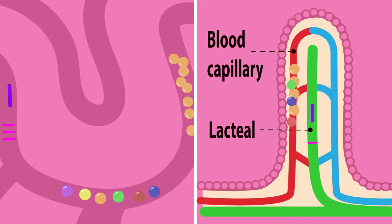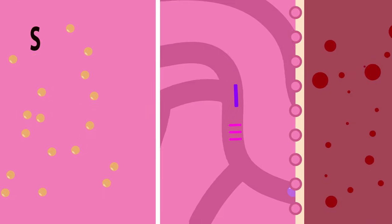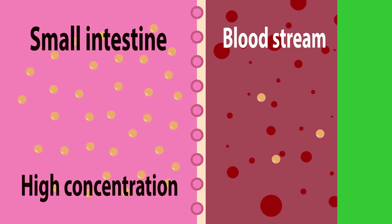These small molecules move by diffusion, moving from a high to a low concentration. For example, the small intestine has a high concentration of sugar molecules, whereas the blood supplying the small intestine has a low concentration of sugar.